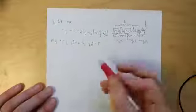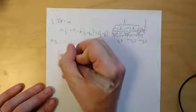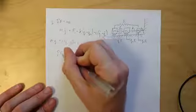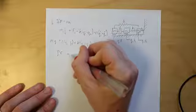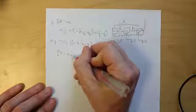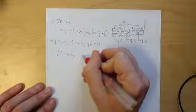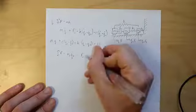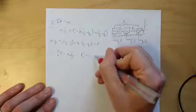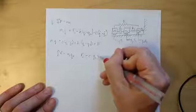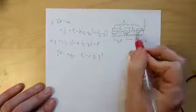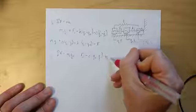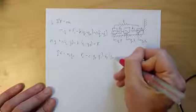Similarly, for the second degree of freedom, sum of the forces is equal to mass 2 times Q2 double dot, which is equal to F2. Now we have a damper here, so minus C times Q2 dot minus Q1 dot. And then a spring there, minus K2 times Q2 minus Q3.